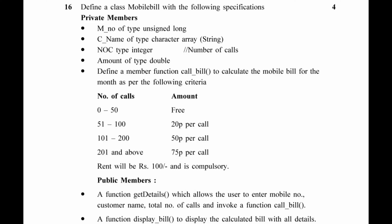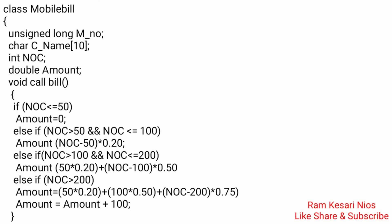Question 16: Define a class MobileBill with the following specification — private members: m_number (unsigned long), c_name (character array/string), noc (integer, number of calls), amount (double). Define member function callBill() to calculate the mobile bill: 0–50 calls free; 51–100 calls at 20 paisa per call; 101–200 calls at 50 paisa per call; 201 and above at 75 paisa per call; rent is Rs. 100 compulsory. Public members: getDetails() to enter mobile number, customer name, total number of calls and invoke callBill(); displayBill() to display the calculated bill. Pause the video and see the answer.